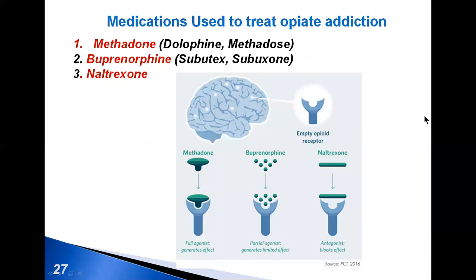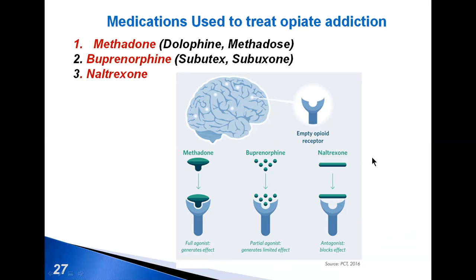Three pharmaceuticals are used for opioid use disorders. Methadone acts by binding to the mu opioid receptor but also has some affinity for the N-methyl-D-aspartate receptor and the anionic glutamate receptor. Buprenorphine affects different types of opioid receptors in different ways — depending on the receptor type, it may be an agonist, partial agonist, or antagonist. Naltrexone and its active metabolite are competitive antagonists at the mu opioid receptor.